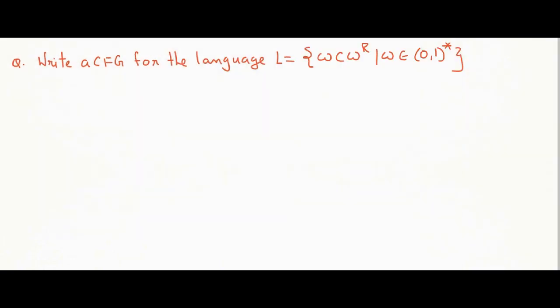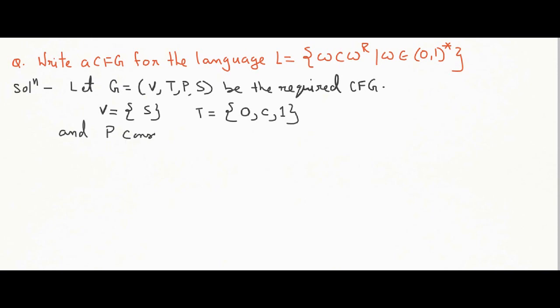Next question. We have to generate L equals W c W reverse. Let G be the required CFG where V equals S, G equals 0, C equals 1 and P consists of following productions. This will generate W c W reverse.